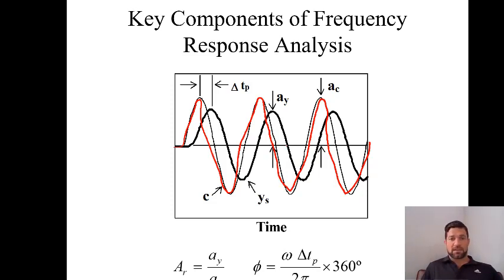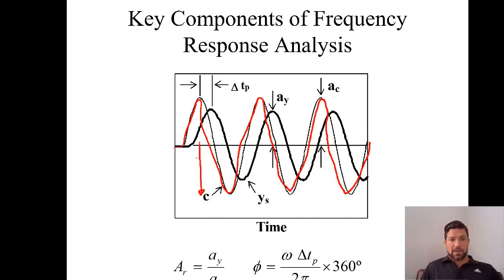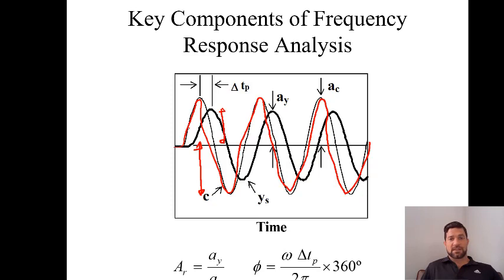There are two important characteristics of this type of response. First, there is an amplitude associated with the sinusoidal input and an amplitude associated with the sensed value. The important parameter called the amplitude ratio, AR, is a measure of the amplitude of the output over the amplitude of the input. The other important term is the phase angle, which is the difference in phase between the two signals. A phase angle of zero means perfectly in phase; 180 degrees means perfectly out of phase. The distance between the two peaks tells us the phase angle.